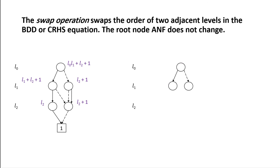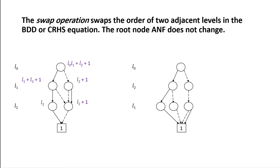This ANF calculation is relevant for the operations I will now describe, because being able to calculate it lets us show that these operations are well-defined. The first operation I want to introduce briefly is the swap operation. This one swaps the order of two adjacent levels in a binary decision diagram or compressed right-hand side equation. On the left-hand side it is very easy — you just swap the two linear combinations — but the right-hand side must be adjusted accordingly.